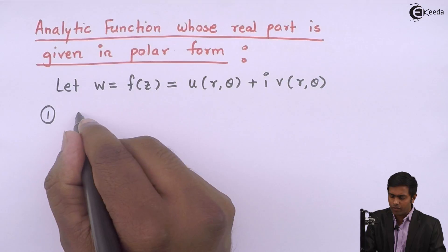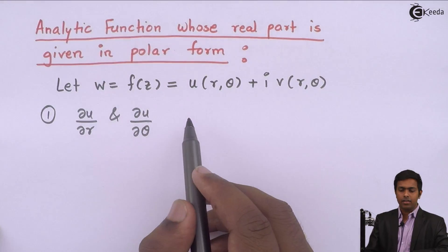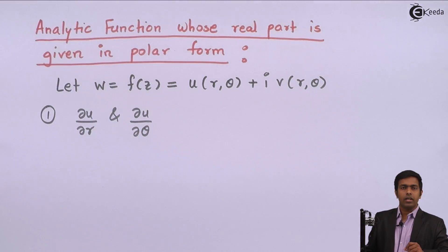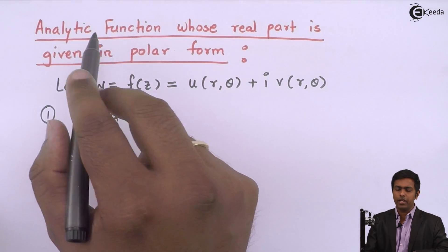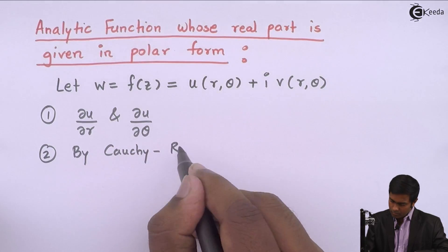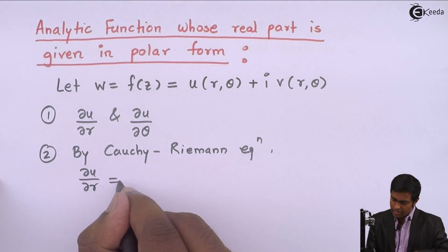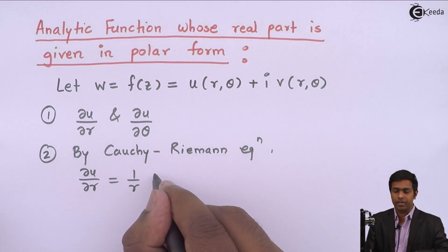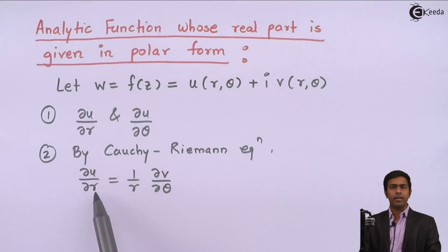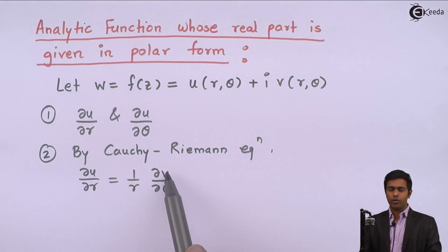In step 1, we find the value of ∂U/∂R and ∂U/∂θ from the given U. Next, once we get those partial derivatives, we use the Cauchy-Riemann equation in polar form since f(z) is analytic. By the Cauchy-Riemann equation, we get ∂U/∂R = (1/R) ∂V/∂θ. Using this, we put the value of ∂U/∂R, take R to the other side, and get the value of ∂V/∂θ.